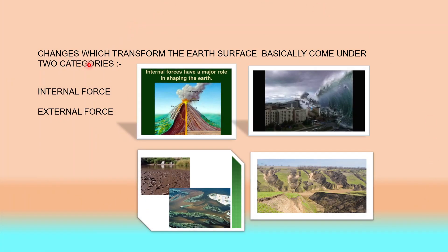Now there are basically two types of changes which occur on the earth: internal forces and external forces. Internal forces include volcanic eruption, earthquake, and a tsunami triggered by an intense underwater earthquake. External forces like floods, soil erosion, and glaciation all keep sculpting and changing the surface of the earth.